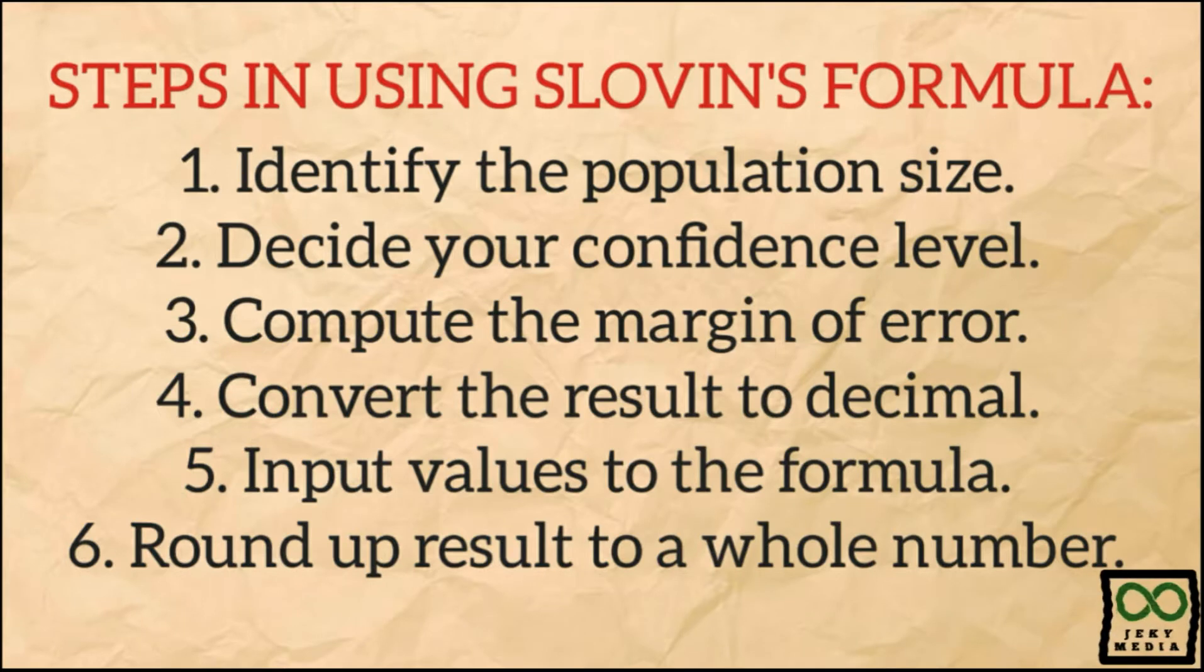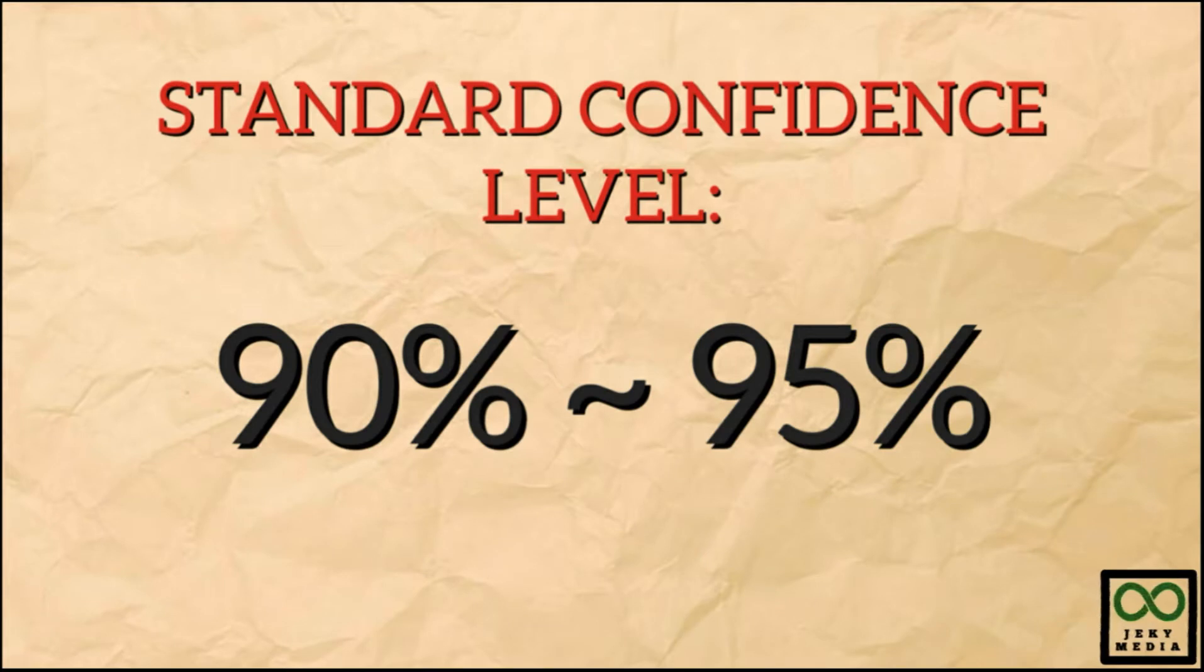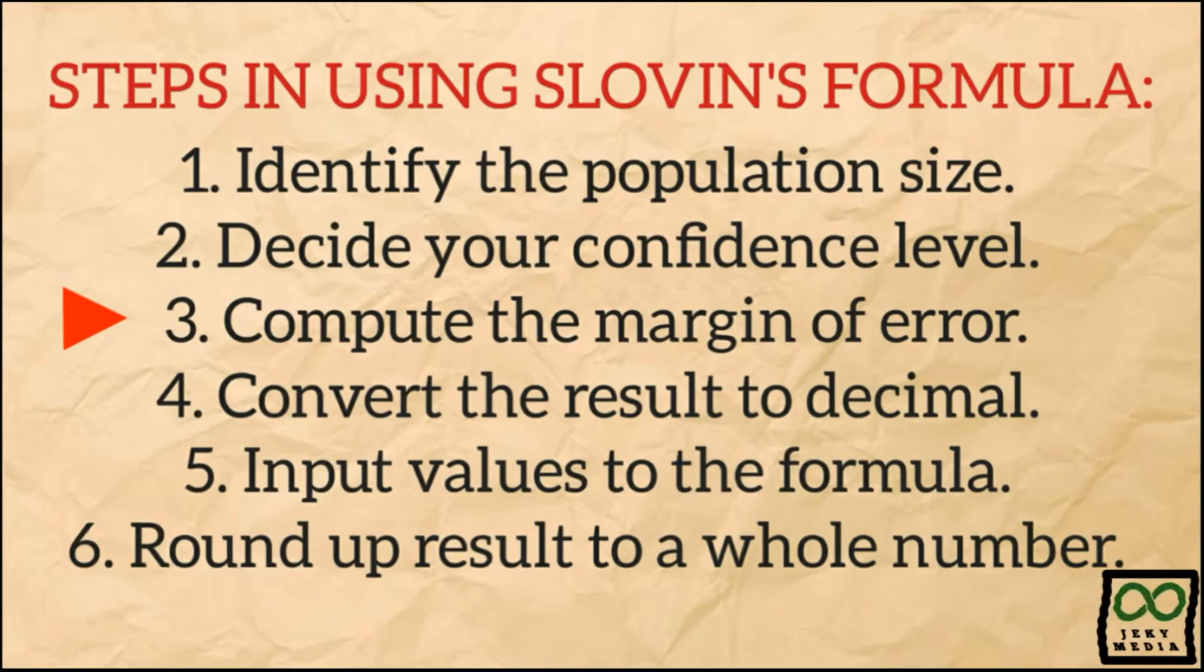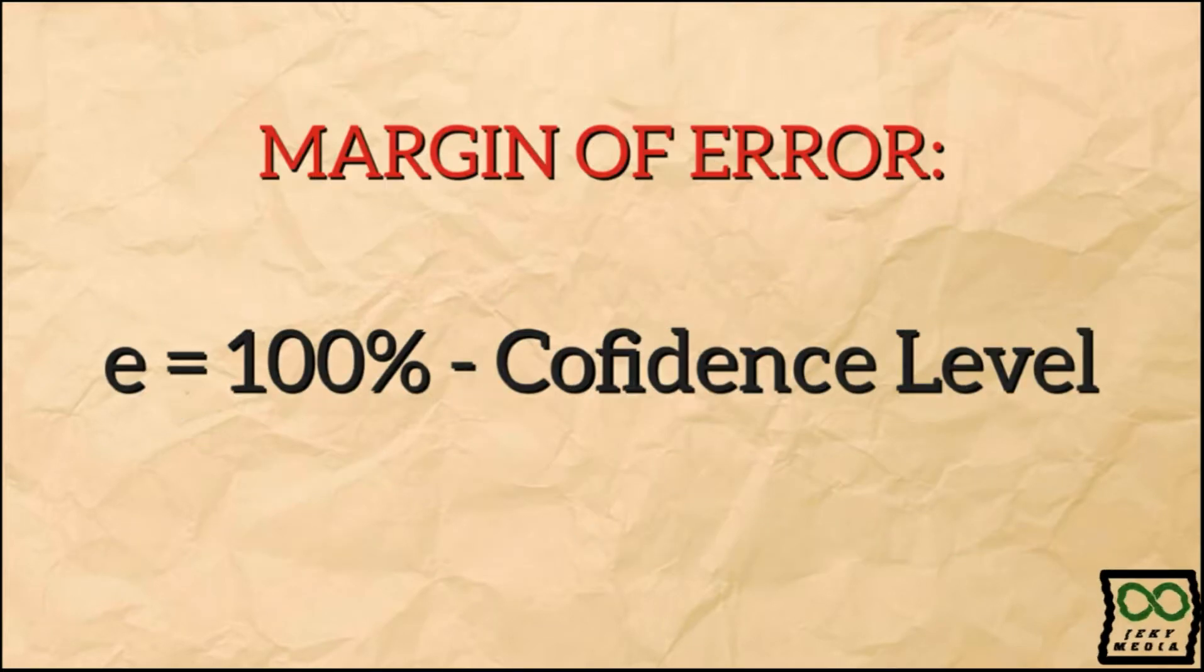Here are the steps in calculating a sample size using Slovin's formula. Number 1, identify the population size. Number 2, decide your confidence level. The standard level is between 90% and 95%, inclusively. Number 3, compute the margin of error using your confidence level. Subtract your confidence level from 100%.